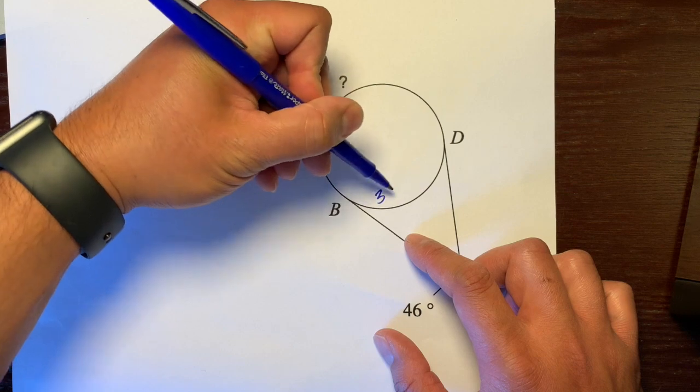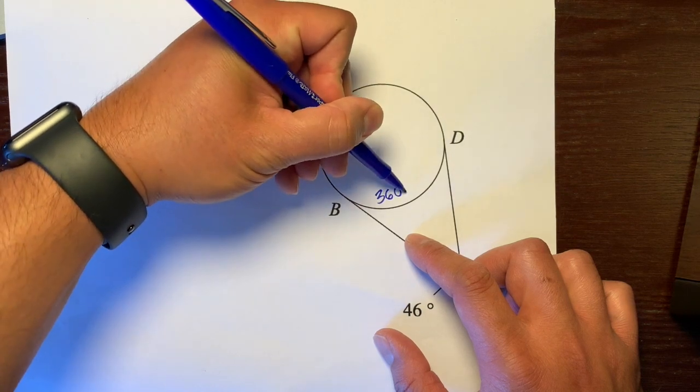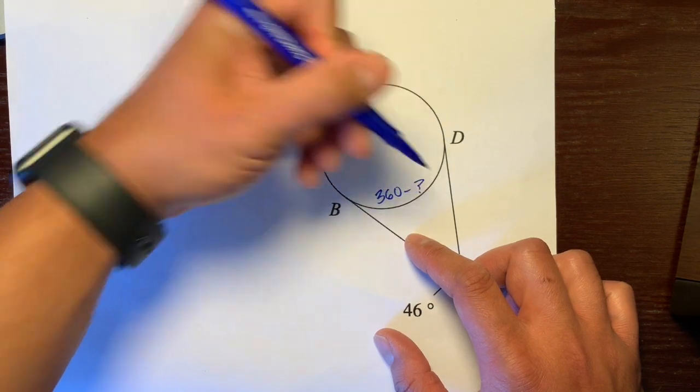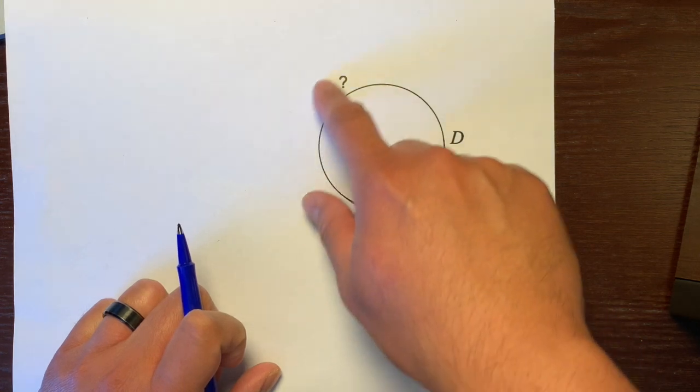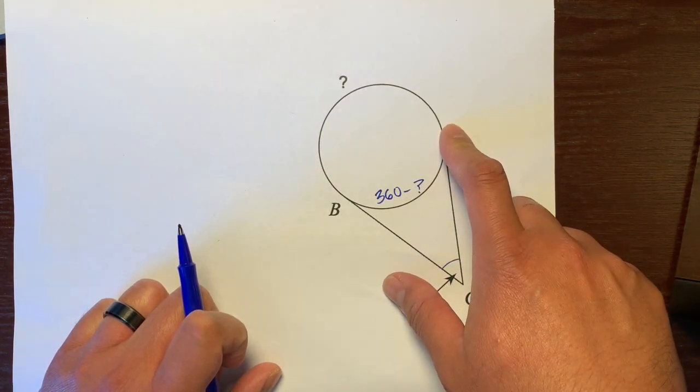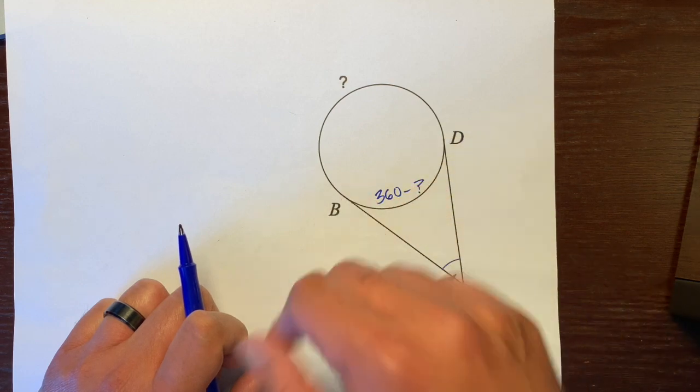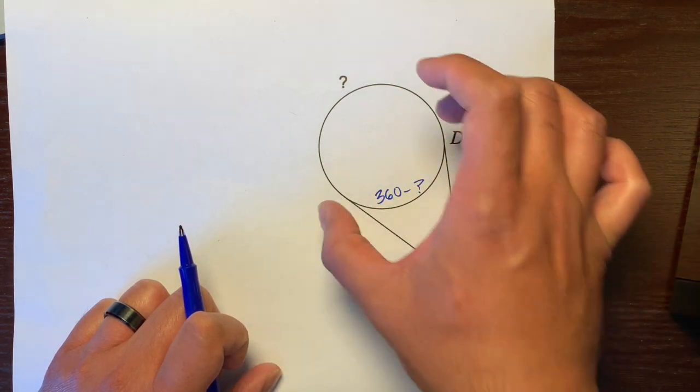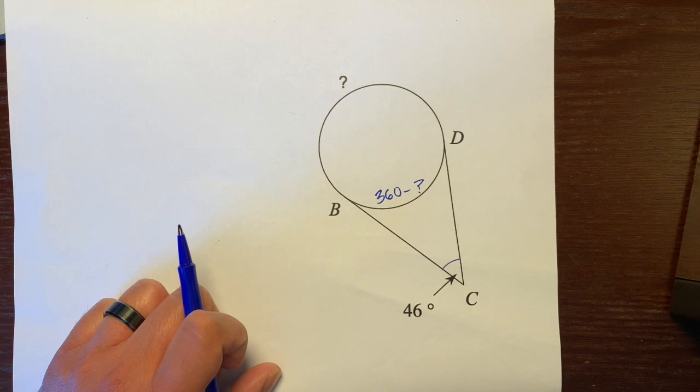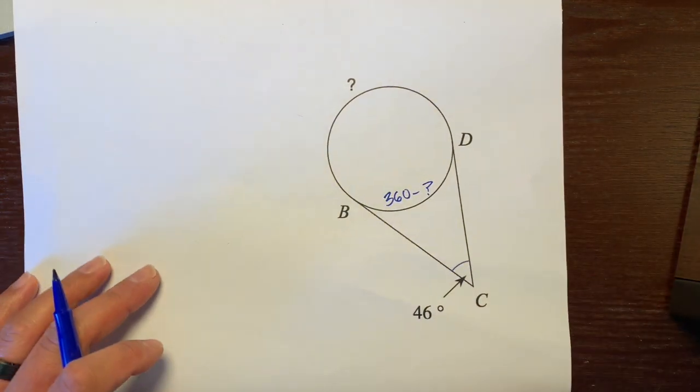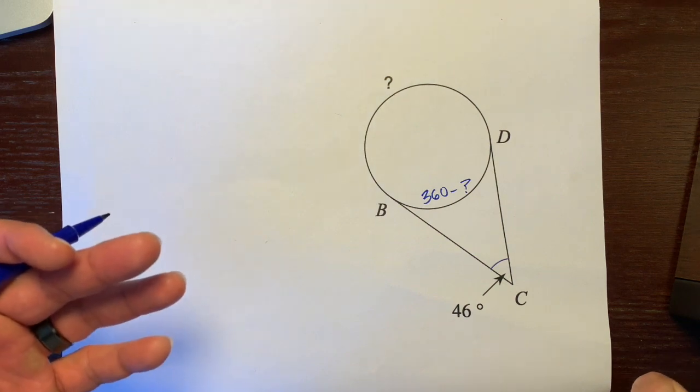So this is what we know about this arc. It is whatever this arc is subtracted from 360. So this arc and this arc both make up 360. There's our information about both arcs. Now let's just set it up.